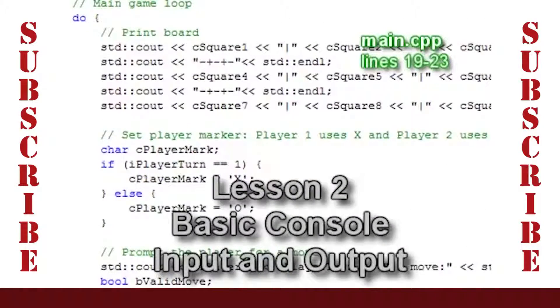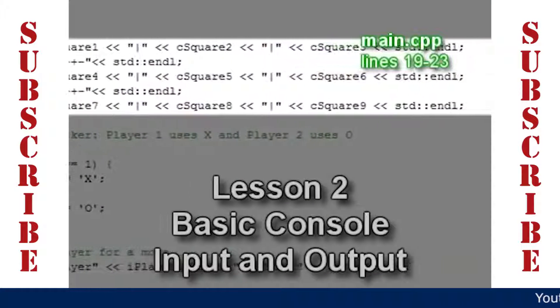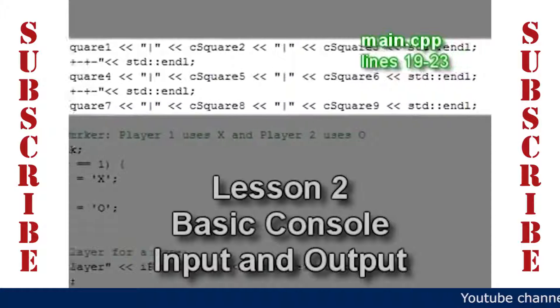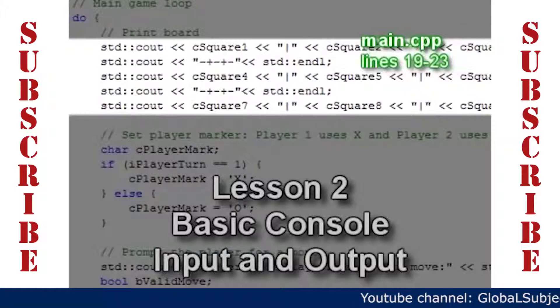Once we enter the game loop, we print the board. These five lines display the Tic-Tac-Toe board in the console window every turn. Remember that the squares were initialized with the characters 1 through 9, so when we run the program the board looks like this.